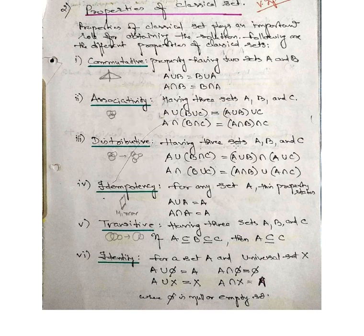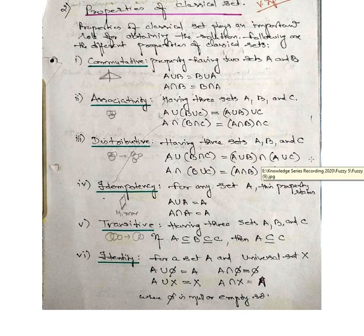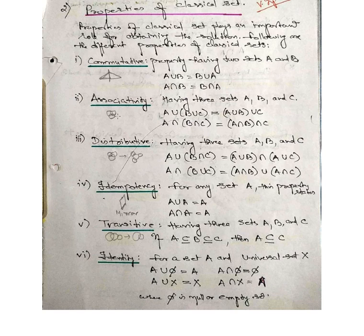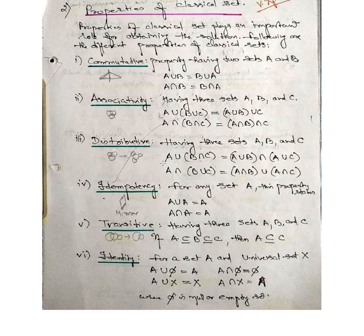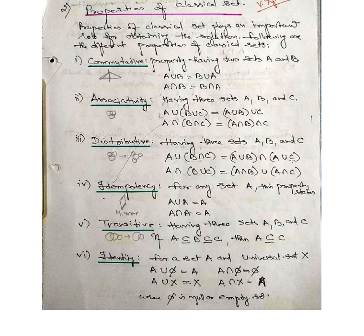The distributive property for three sets A, B, C states: A union (B intersection C) equals (A union B) intersection (A union C), and A intersection (B union C) equals (A intersection B) union (A intersection C). This is like a three-circle arrangement where modification of union to intersection separates the circles accordingly.